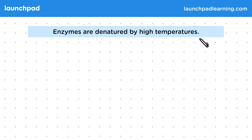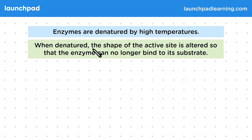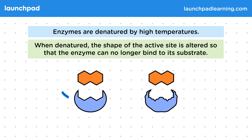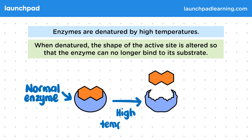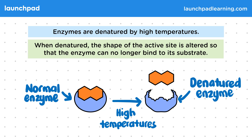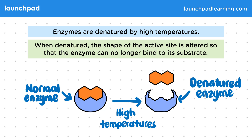Enzymes are denatured by high temperatures. When denatured, the shape of the active site is altered so that the enzyme can no longer bind to its substrate. On the left-hand side, you can see a normal enzyme with its active site that's complementary to the substrate. However, when we expose this enzyme to high temperatures, it becomes denatured — the shape of the active site is permanently altered so that the substrate can no longer fit. The key no longer fits the lock. This is what is meant by the term denatured enzyme.